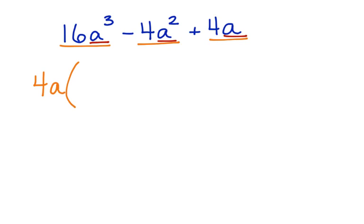Now let's actually take out 4a. If we take 4a out of 16a to the third, then I'm left with 4a to the second. Minus, take a 4a out of 4a squared, I'm only left with a.